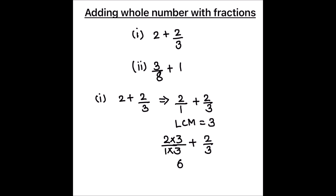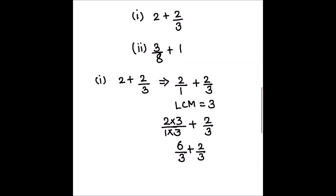2 times 3 is 6, giving us 6 upon 3 plus 2 upon 3. So 2 by 1 equals 6 upon 3. Now we can add the two fractions directly since they both have a common denominator. That is going to be 6 plus 2 divided by 3, which equals 8 upon 3. This is our final answer. This is how we add the two fractions.